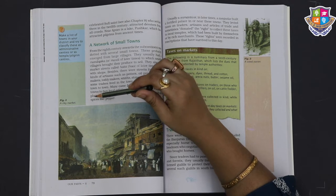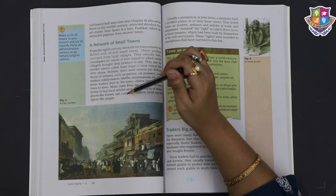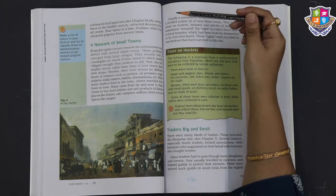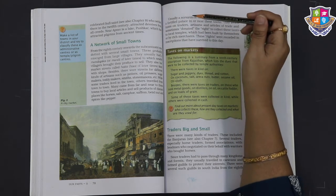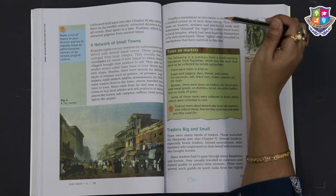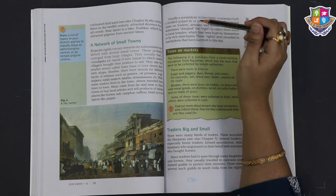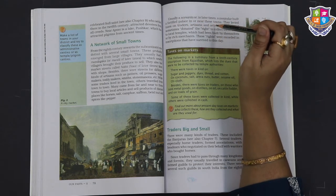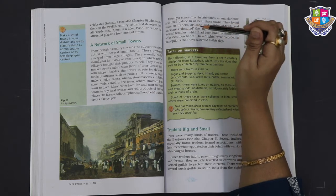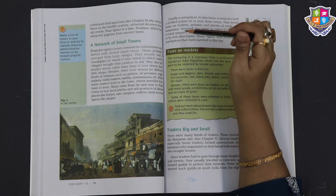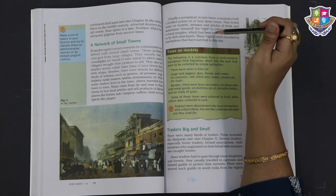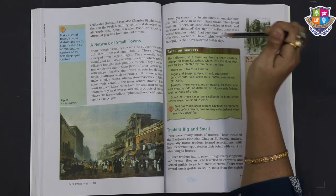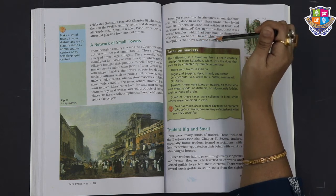Many came from far and near to these towns to buy local articles and sell products of distant places like horses, salt, camphor, saffron, betel nut, and spices like pepper. Usually a samantha or in later times a zamindar built a fortified palace in or near these towns. They levied taxes on traders, artisans and articles of trade, and sometimes donated the right to collect these taxes to local temples which had been built by themselves or rich merchants. These rights were recorded in inscriptions that have survived to this day.